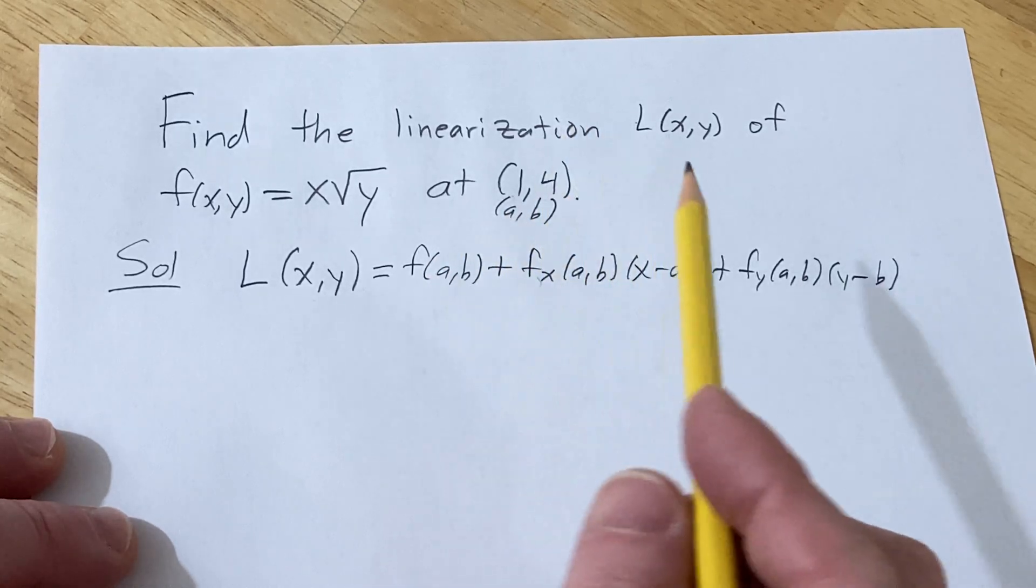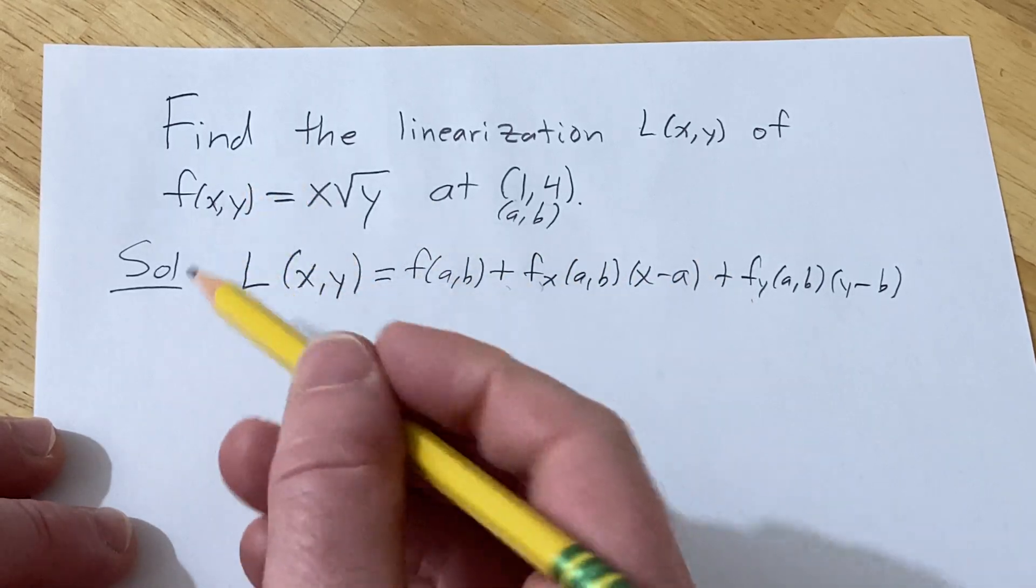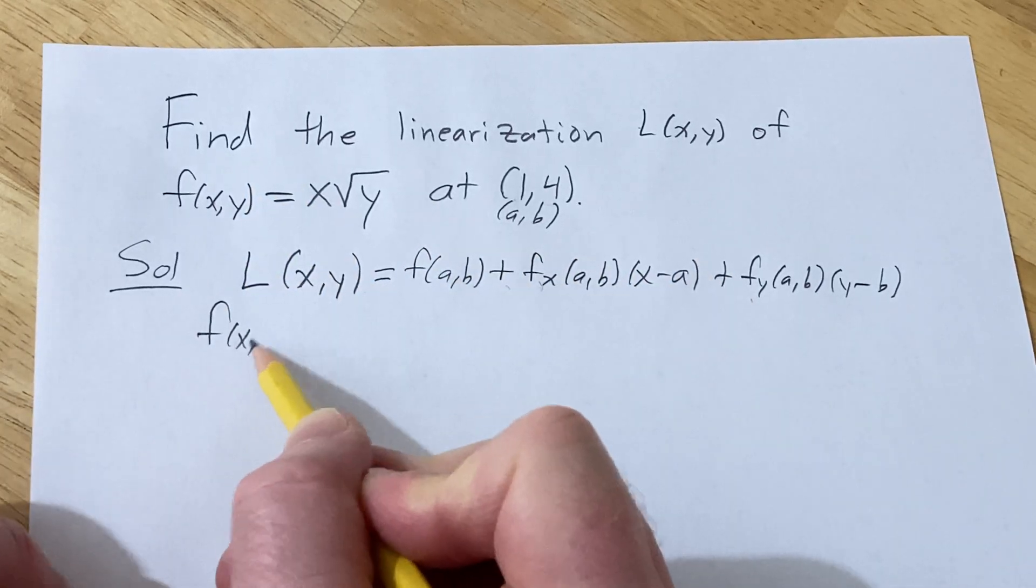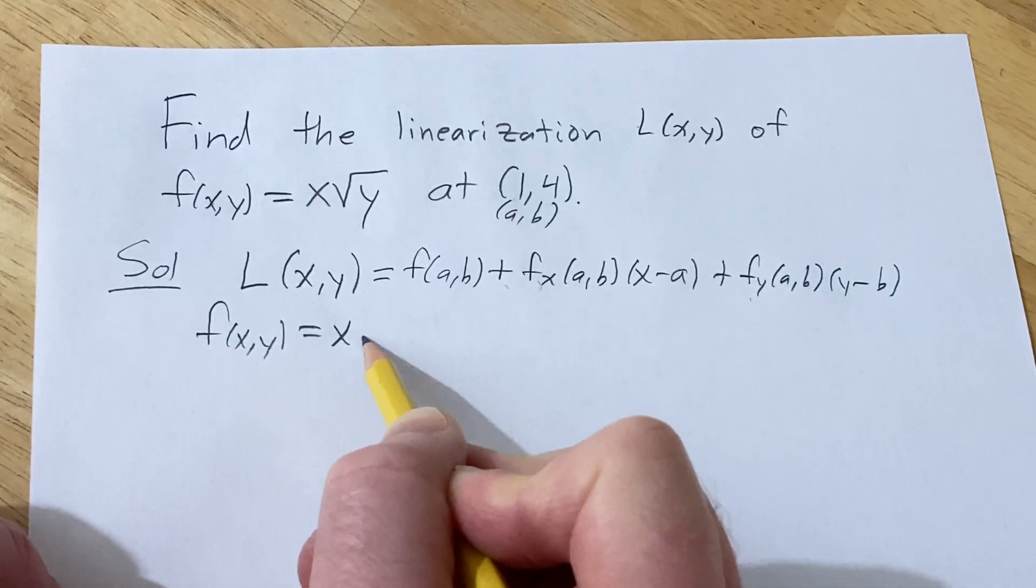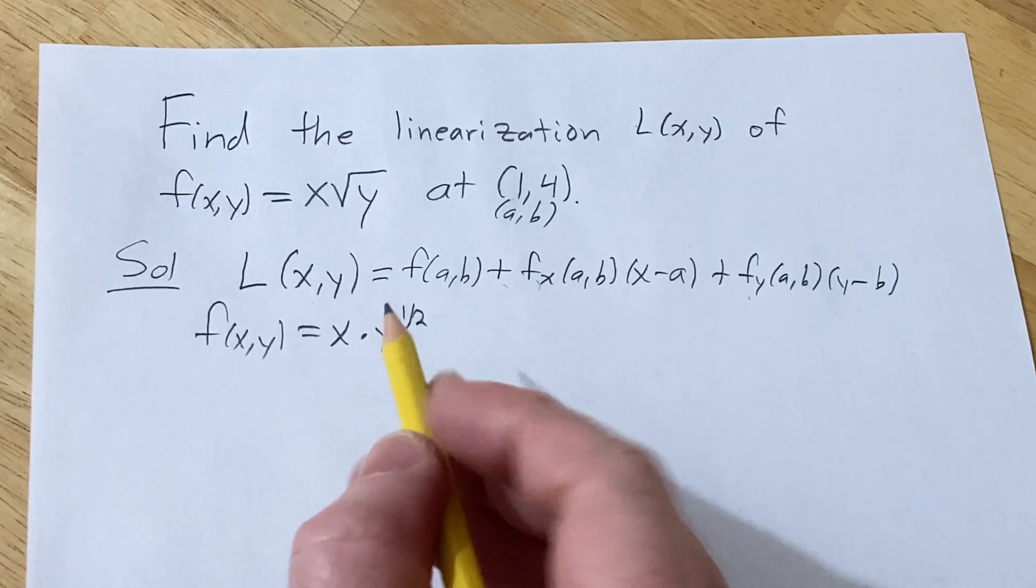In this case our (a,b) is (1,4). So before we find these derivatives which we need for this formula, let's go ahead and rewrite our function f. We can think of it as x times y to the 1/2. And that just makes it easier to differentiate because now we have a power here.